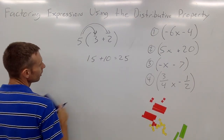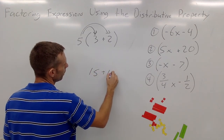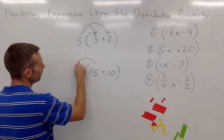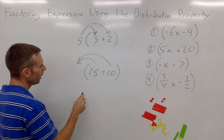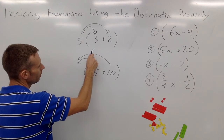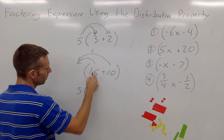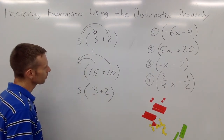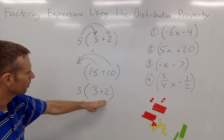Now what we're doing with factoring is we're trying to go the other way. Let's say we already had 15 plus 10 and we wanted to know what we could factor out. We can see that the greatest common factor of 15 and 10 is indeed 5. So if we were to work this in reverse, we're going to take out a 5, put the 5 on the outside, and 15 divided by 5 gives us 3 on the inside and 10 divided by 5 gives us 2.